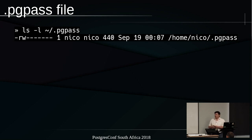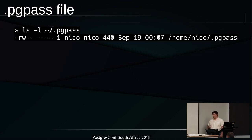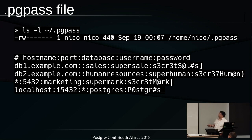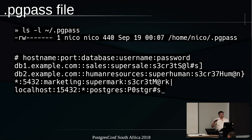First of all, there's a file that sits in your home directory called pgpass, which you can put passwords for databases in. This file only works if the permissions on it are set so that you, as the user, are the only one with read and write access — the same as your SSH keys. If that file doesn't have those permissions, it will be ignored and not used by your PSQL command line client.